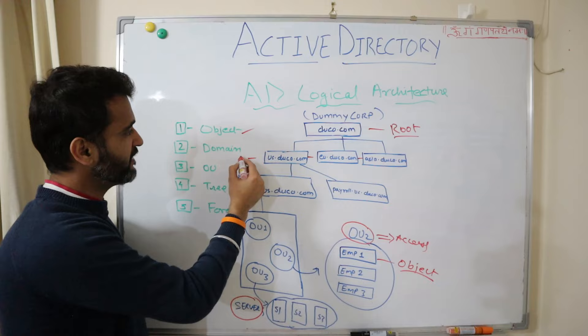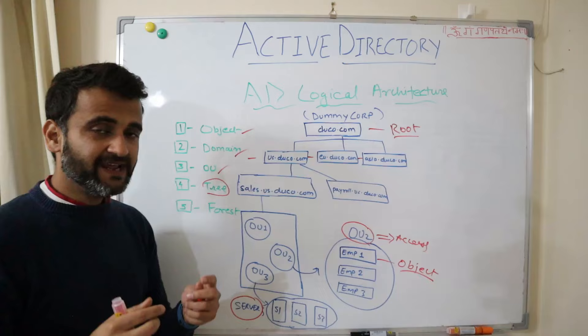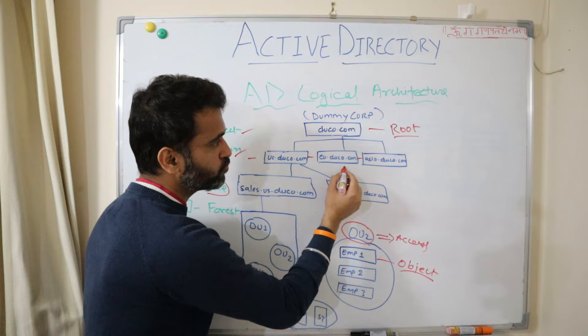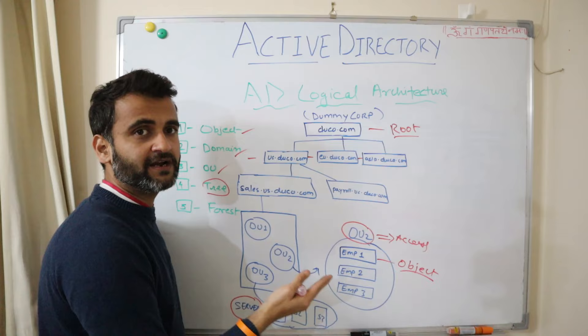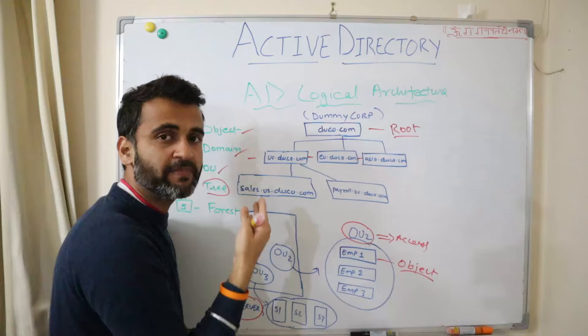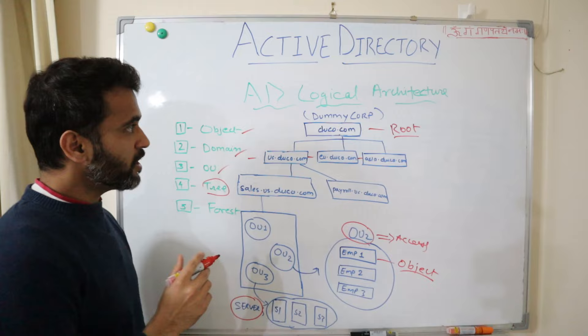We have covered objects, domain, and OU. What is a Tree? A Tree is a combination of those objects and domains which share the same namespace. So us.duco.com, europe.duco.com, and asia.duco.com are all part of a single tree because they all go to the same root. This duco.com is the root of your tree, and these are the branches of your root. That's why it is called a tree.